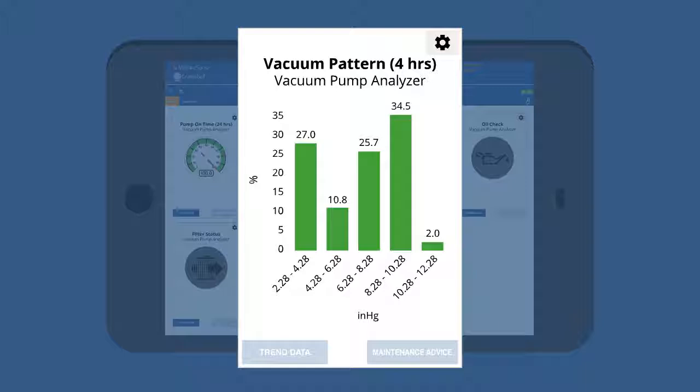For example, this vacuum pattern dashboard shows normal operating patterns over a 4-hour period. Dramatic shifts shown here are an early indication of changing conveying performance.